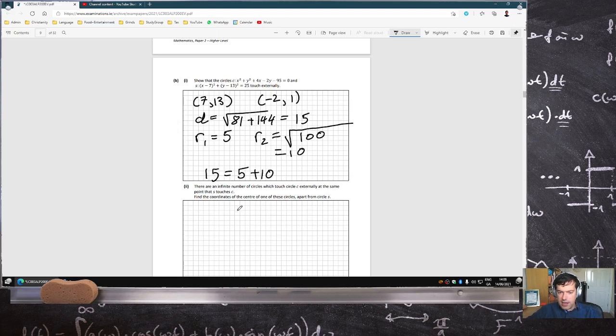There are an infinite number of circles which touch C externally at the same point that S touches C. Find the coordinates of the center of one of these circles apart from S. Oh, what's going on? So I have one circle C and another circle S, and there's an infinite number of circles which touch circle C externally at the same point. Find the coordinates of the center of one of these circles apart from S.